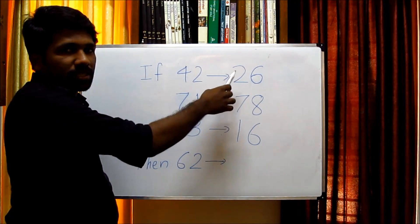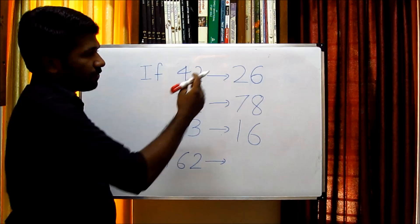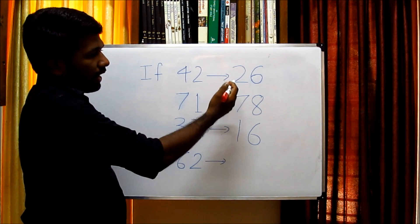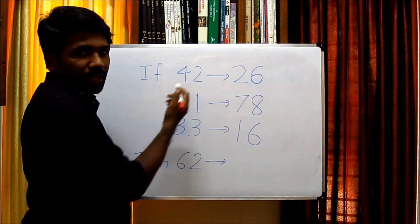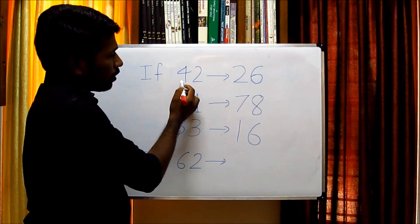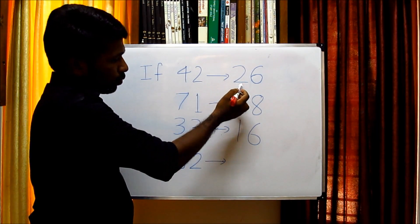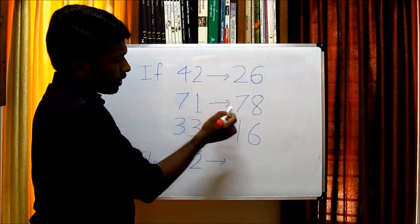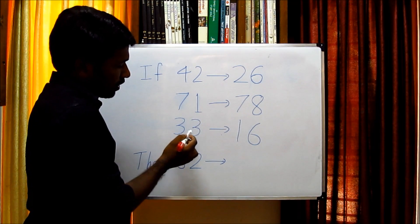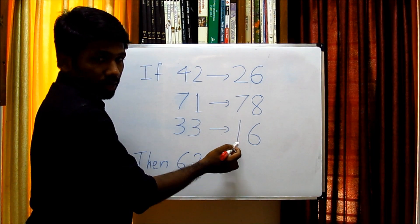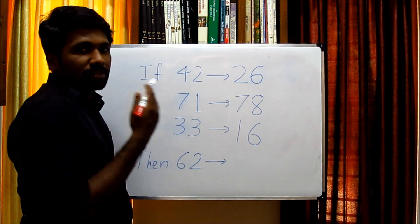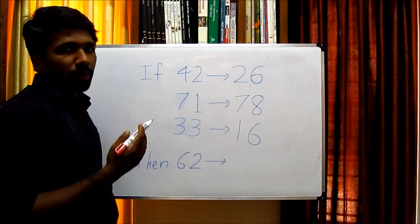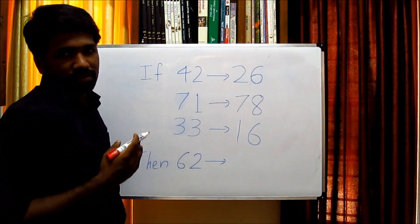Let us analyze the first digit in the right side. Here the first digit is formed by dividing the digits in the left side. That is, 4 divided by 2 gives 2, 7 divided by 1 gives 7, 3 divided by 3 gives 1. That is, the first digit of the right side is formed by dividing the two digits in the left side.